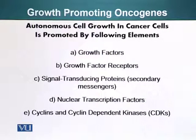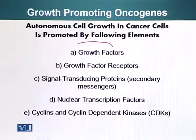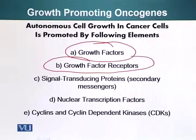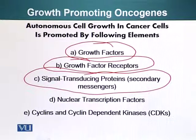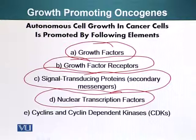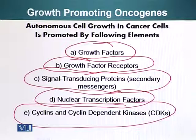There are subtypes which fit in this category. Autonomous cell growth in cancer cells is promoted by the following elements: growth factors, presence of extra growth factors, presence of extra growth factor receptors, signal transducing proteins which convey the message received at the cell surface, nuclear transcription factors that bind DNA and cause transcription and translation of certain genes, and cyclins and cyclin-dependent kinases. We have already talked about CDKs and are going to talk about them in more detail.